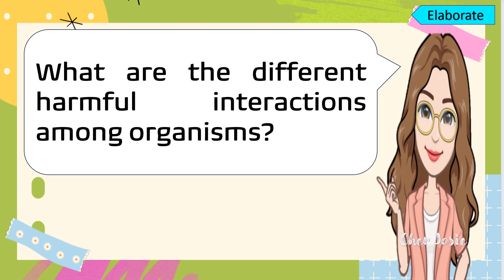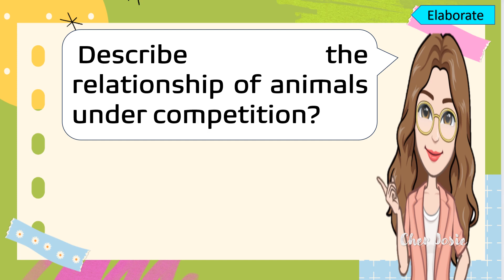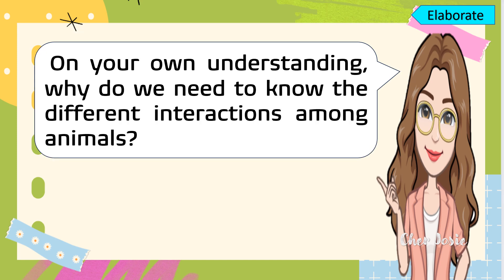Based on our discussion, what are the different harmful interactions among organisms? Can you describe the relationship of animals under predation? Can you describe the relationship of animals under parasitism? What about the relationship of animals under competition? Based on your understanding of our lesson, why do we need to know the different interactions among animals?